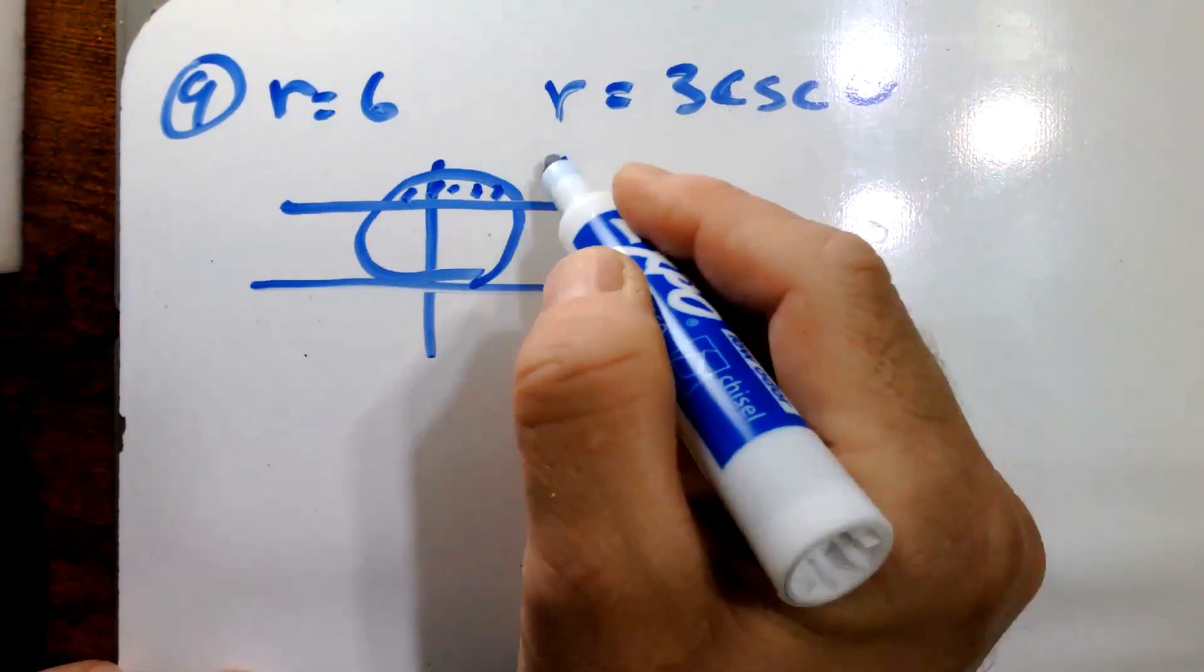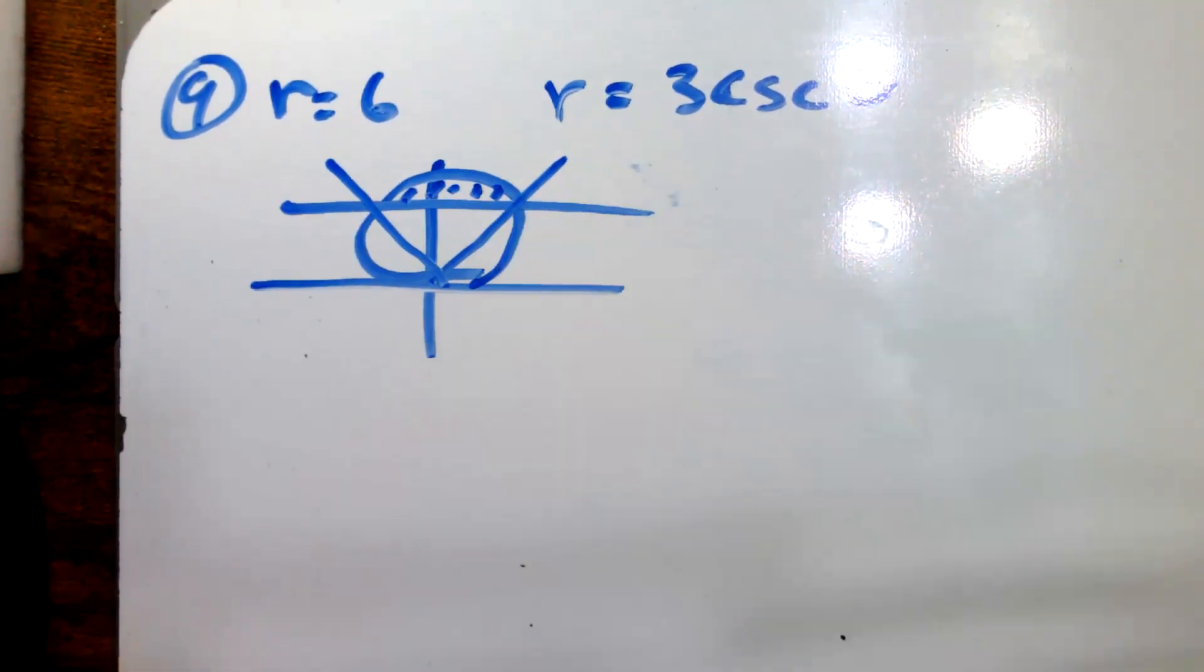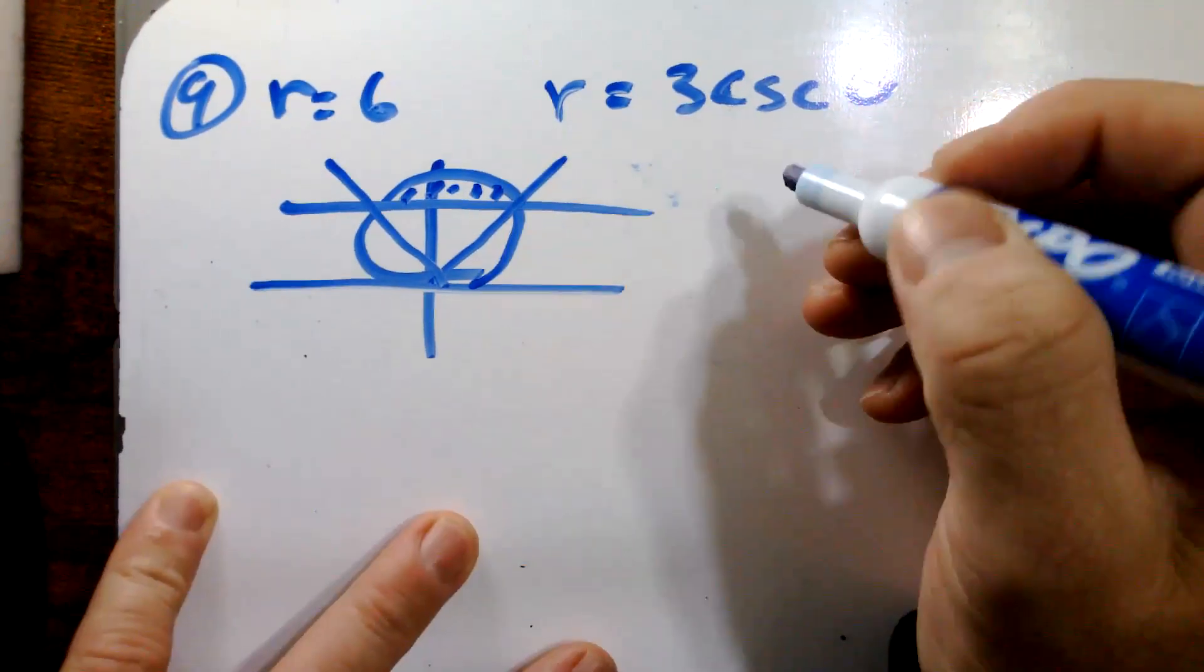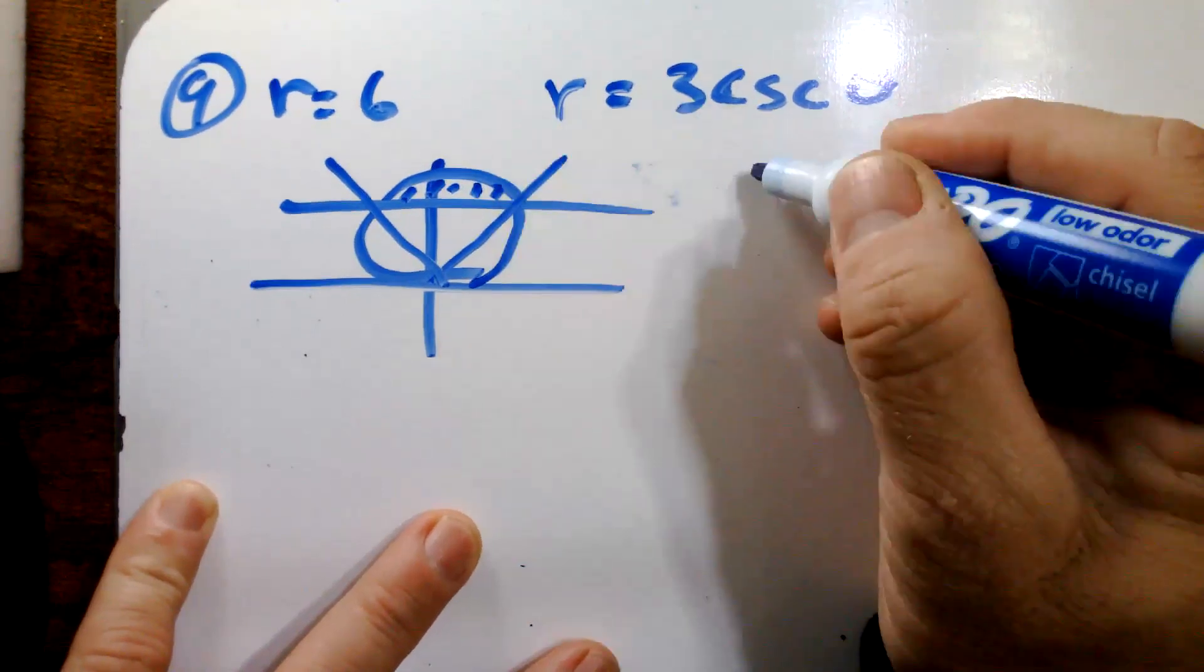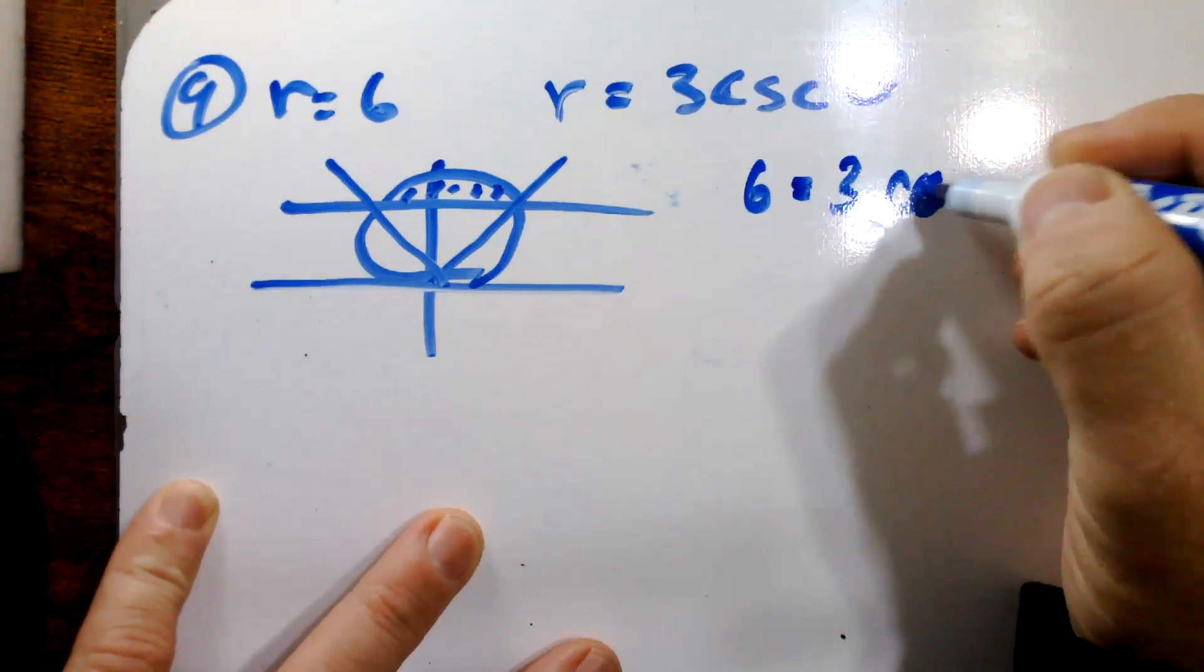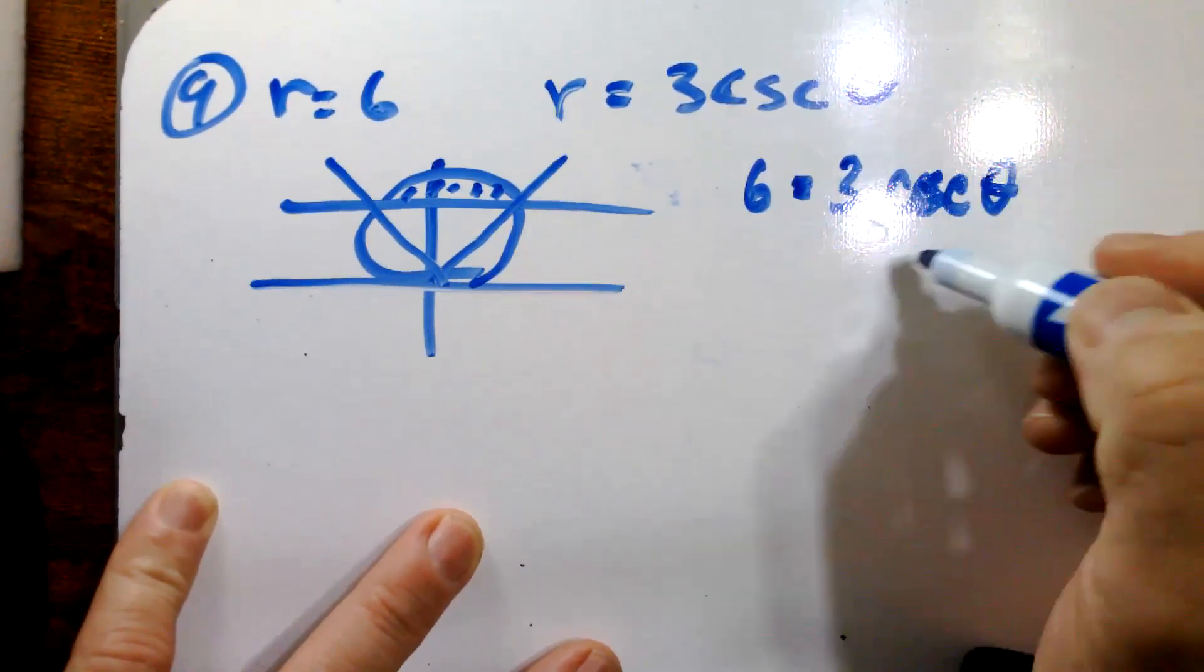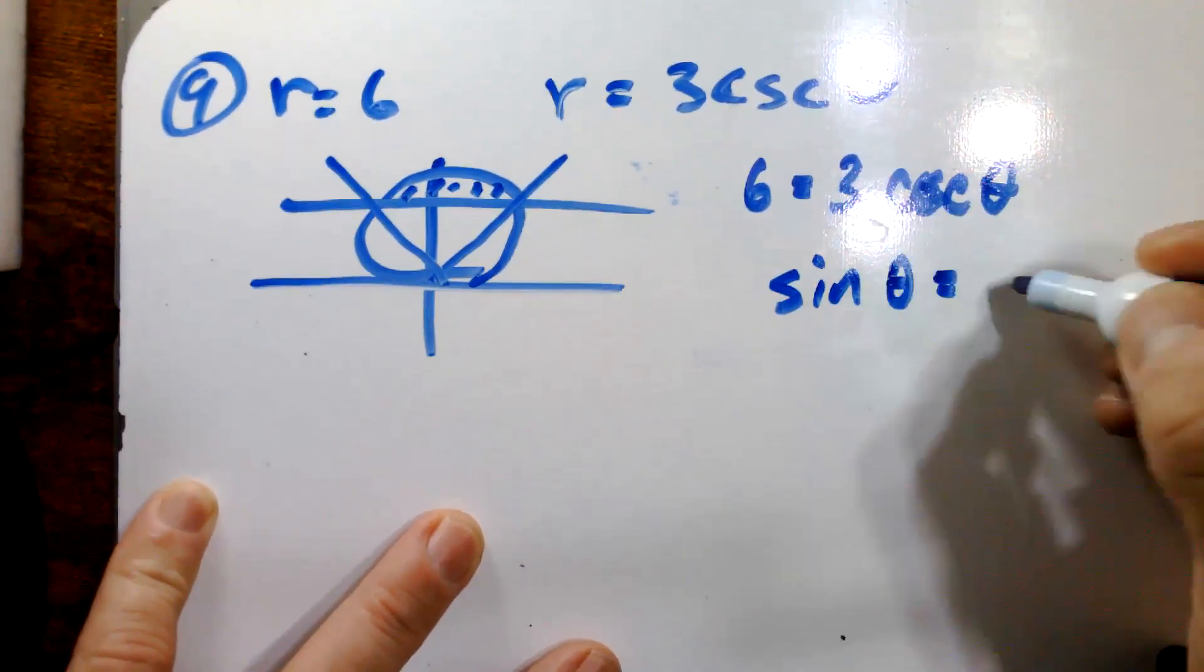So what we're looking for are what are these angle values here for our limits of integration. That's the first trick. And how do we find those? Well, just like we did back in calc one or calc two, we're going to set these two functions equal to each other. We're going to get six is equal to three cosecant theta. And solving for theta, you're going to quickly find that the sine of theta is equal to one half.